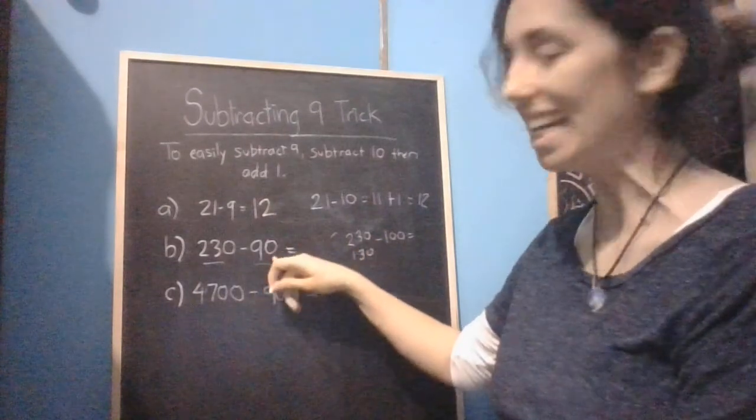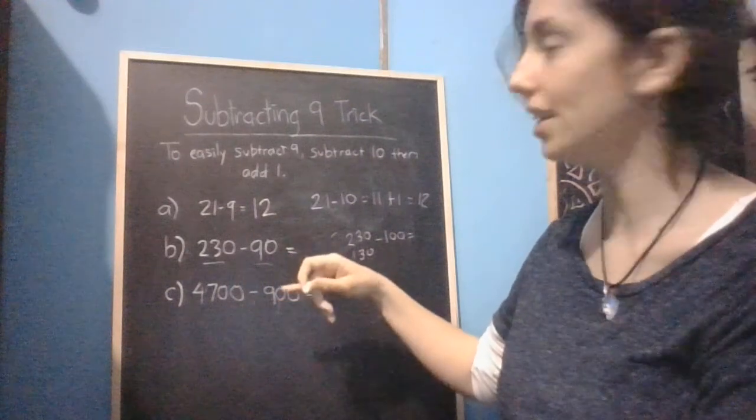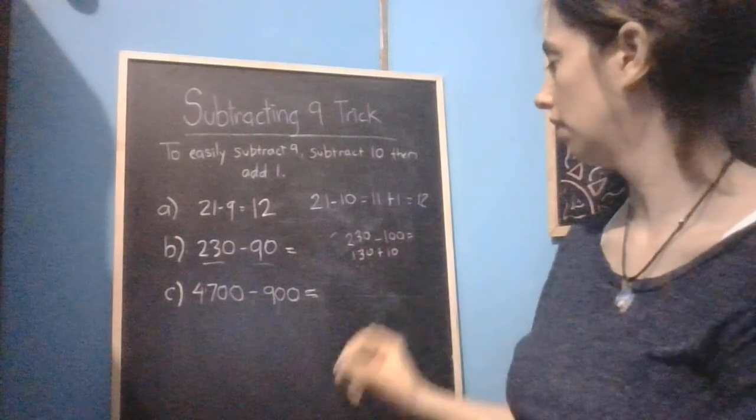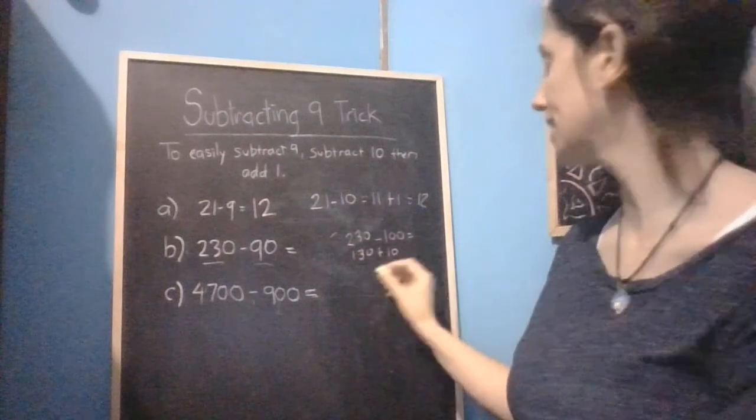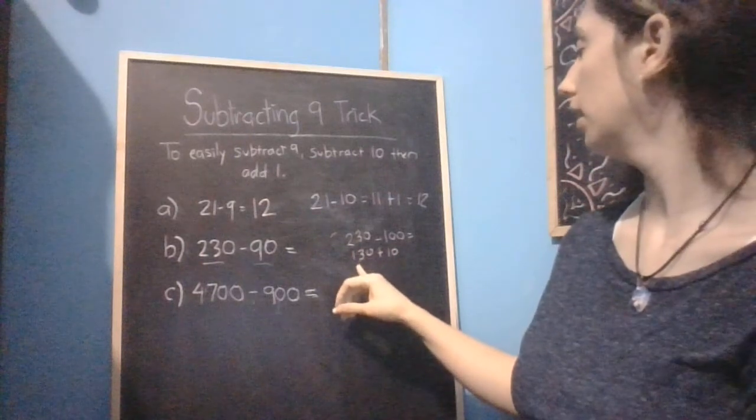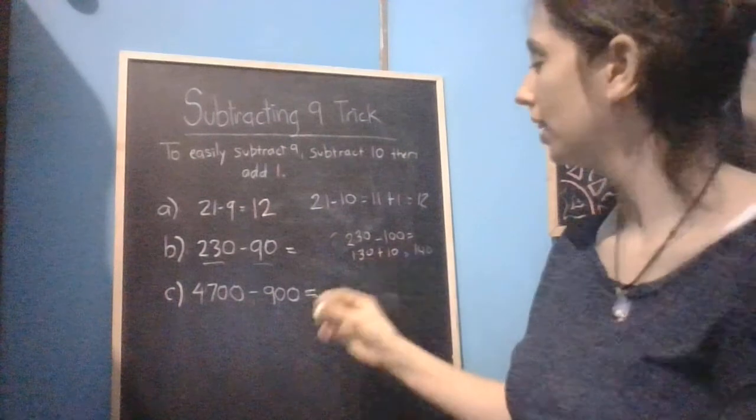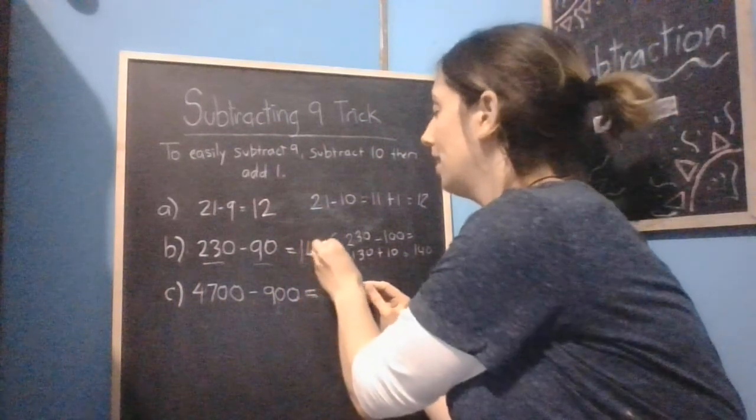But because 90 is 10 less than 100, just like 9 is 1 less than 10, we're going to have to add 10 onto our answer. Just like we would add 1 onto 10 to give us the correct answer. So 130 plus 10 gives us 140. So 140 is our answer.